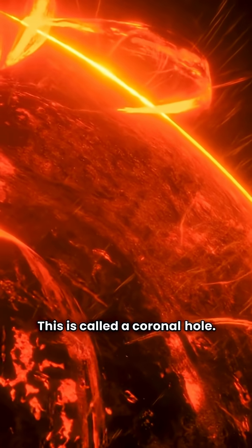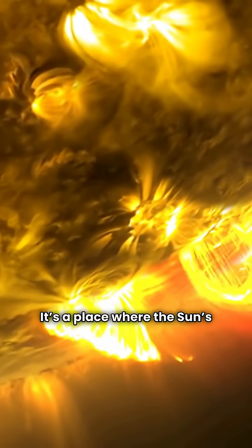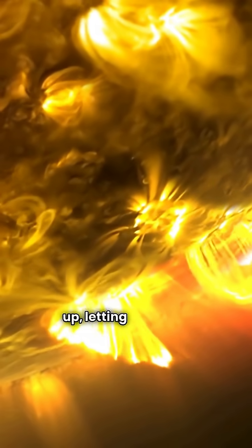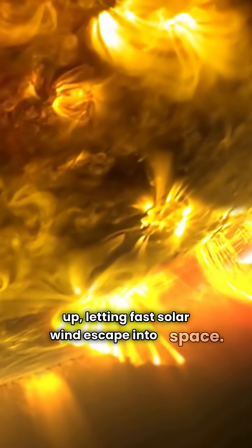This is called a coronal hole. It's a place where the Sun's magnetic field opens up, letting fast solar wind escape into space.